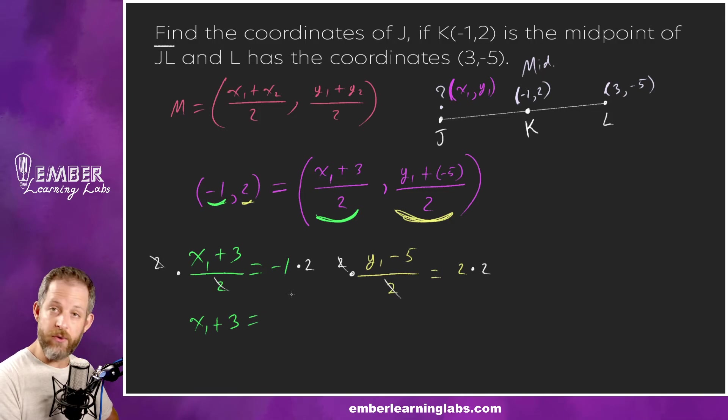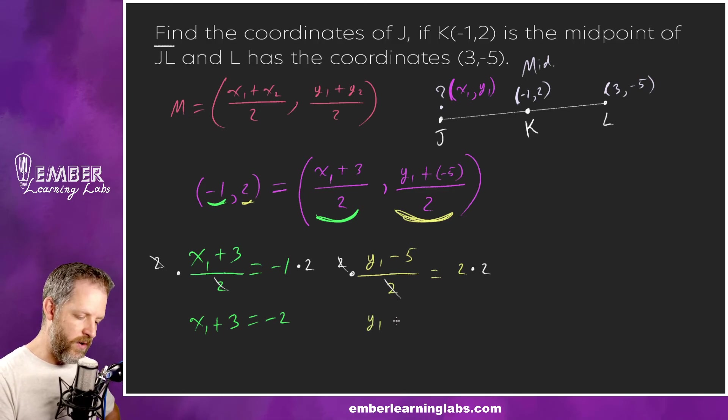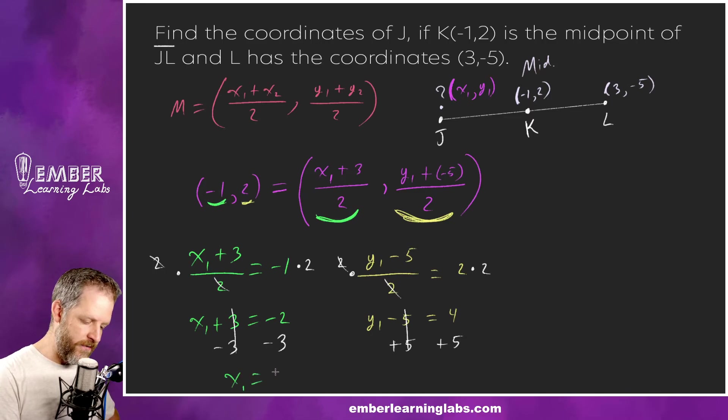So these cancel. Over on the green one we'll bring down x1 plus three equals negative one times two is of course negative two. And then over on the yellow one we're going to bring down y1 minus five equals two times two, everybody's favorite problem, that's number four. And then over here we're going to subtract this three, and then over here we're going to add five. These cancel leaving us with x1 equals negative five and y1 equals positive nine. So our final answer then is, what is this, this is J, is negative five, nine. Easy peasy.